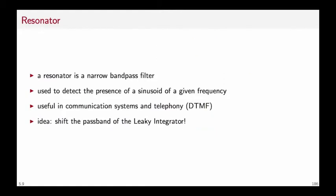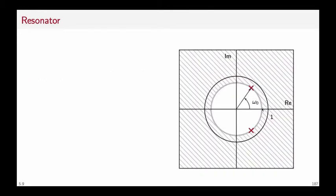The idea is to obtain a resonator by shifting the pass band of the leaky integrator. Remember the leaky integrator has a pole in lambda here and the idea is to move the pole radially around the circle of radius lambda to shift the pass band at the frequency that we're interested in selecting. Since we want a real filter we also have to create a complex conjugate pole at an angle that is minus omega zero.